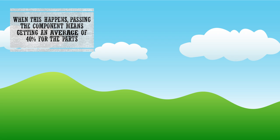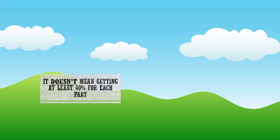When this happens, passing the component means getting an average of 40% for the parts, usually called elements. It doesn't mean getting at least 40% for each part or element.